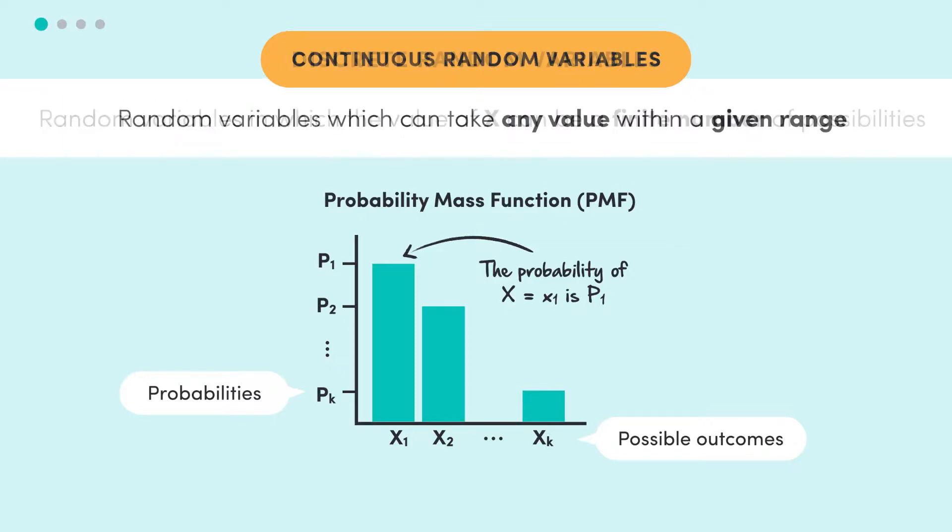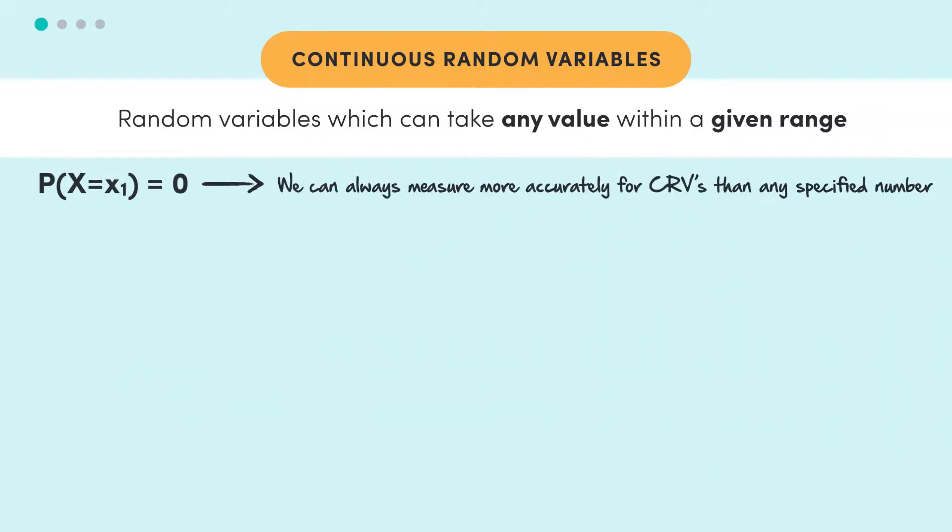Now for continuous random variables, we have a problem. We can't actually do this, because for a continuous random variable, the probability that it equals a particular value x is zero. That is, the probability that big X is equal to little x is zero. This is because we can always measure more accurately for continuous random variables than any number that we specify.